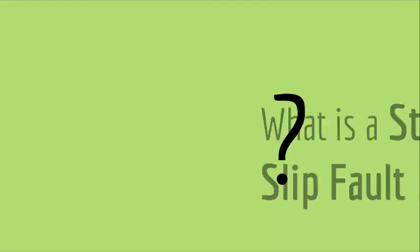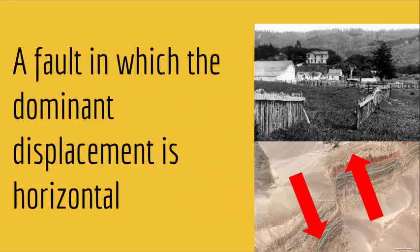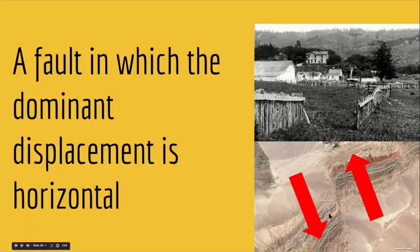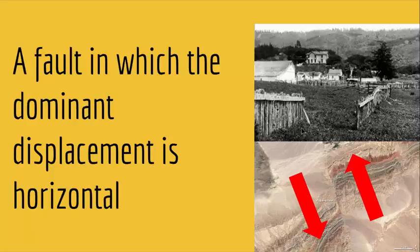Now let's look at strike-slip faults. Strike-slip faults are faults in which the dominant displacement is horizontal. As you can see in this aerial photo, these beds had a fault in between and they moved horizontally — this part went left while this part went right. The displacement happened horizontally, not at an angle. This is an example of the aftermath of strike-slip faults.